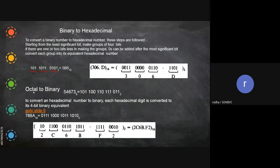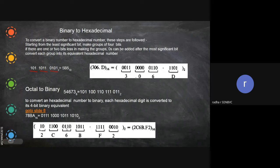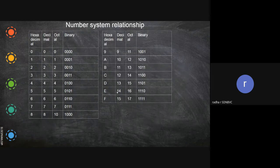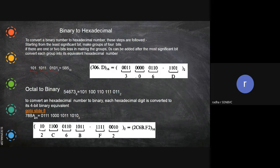We have already seen octal-to-binary where you take 3-bit groups. The difference here is that for hexadecimal you use 4-bit groups. For hexadecimal to binary: A is represented as 1010, B stays as its 4-bit form, 8 is 1000, and 7 is 0111. Note that after 7 you still go to 4 bits — so 8 requires 4-bit representation.